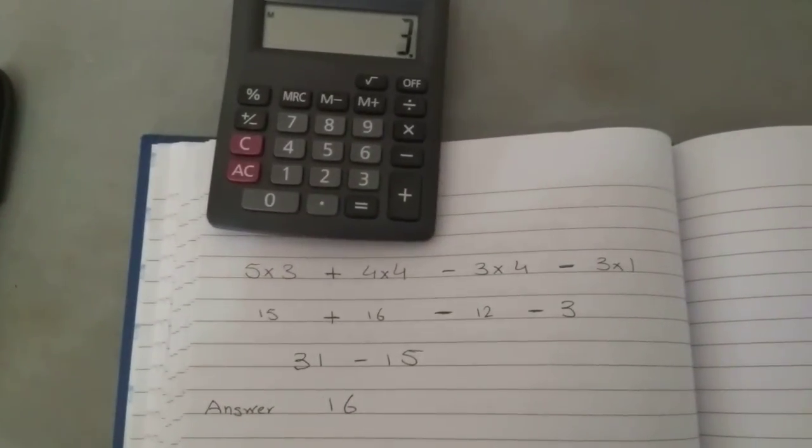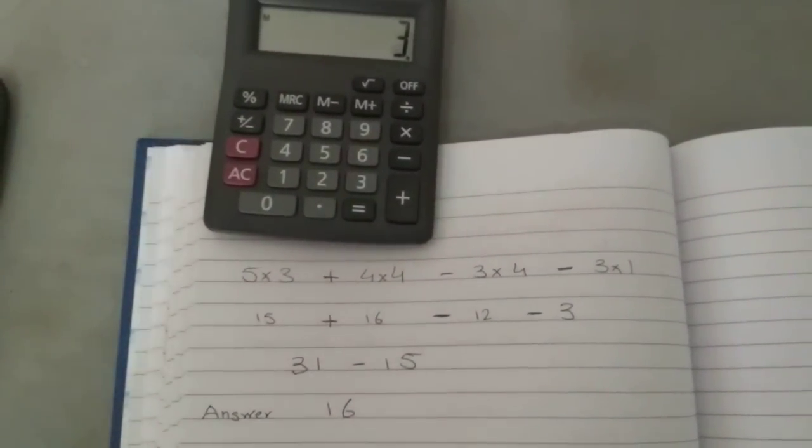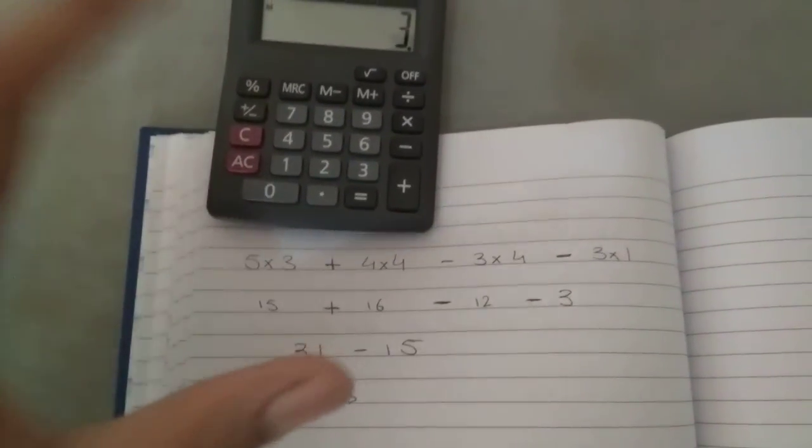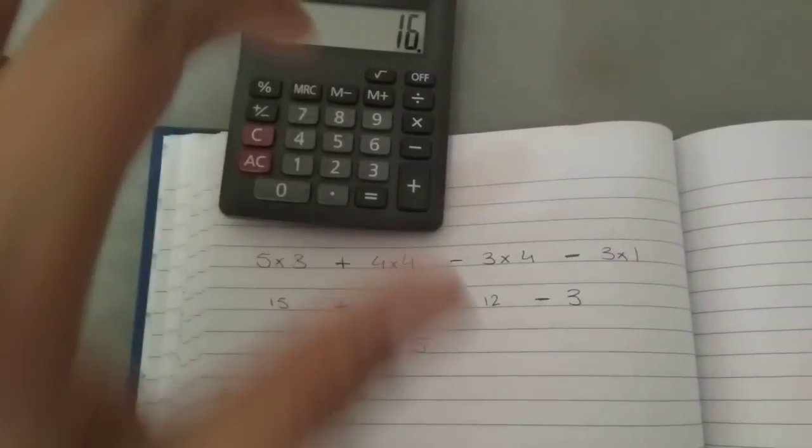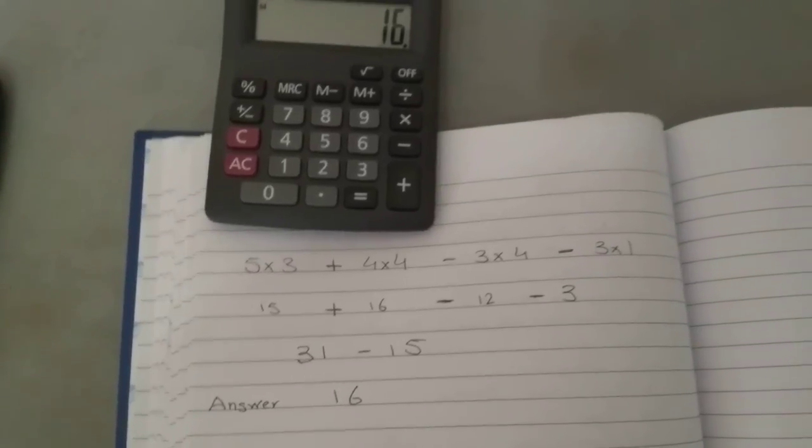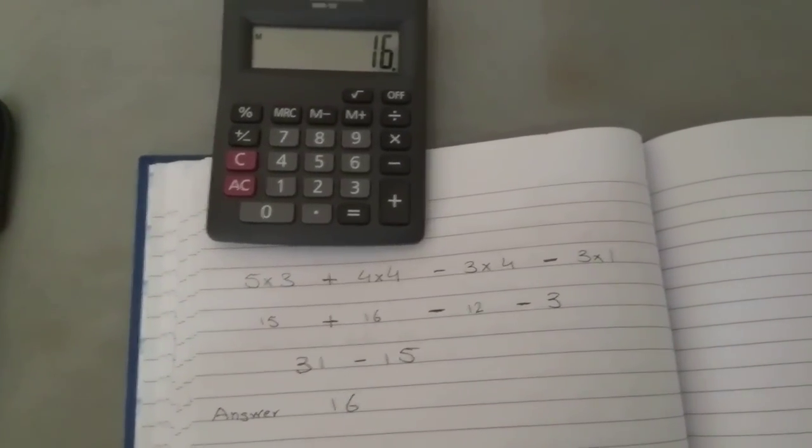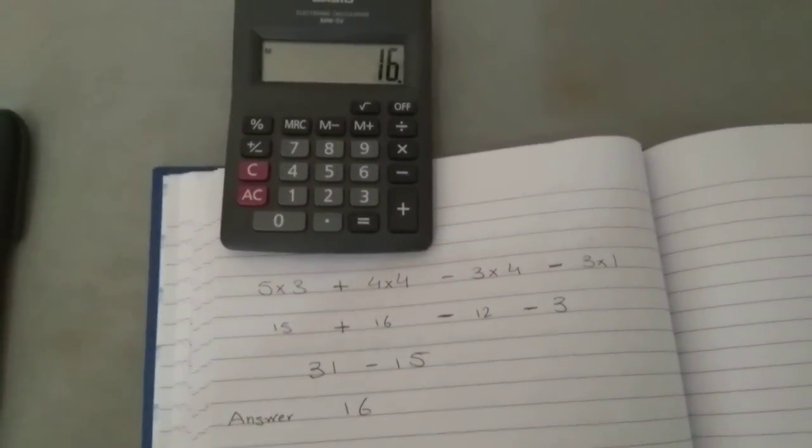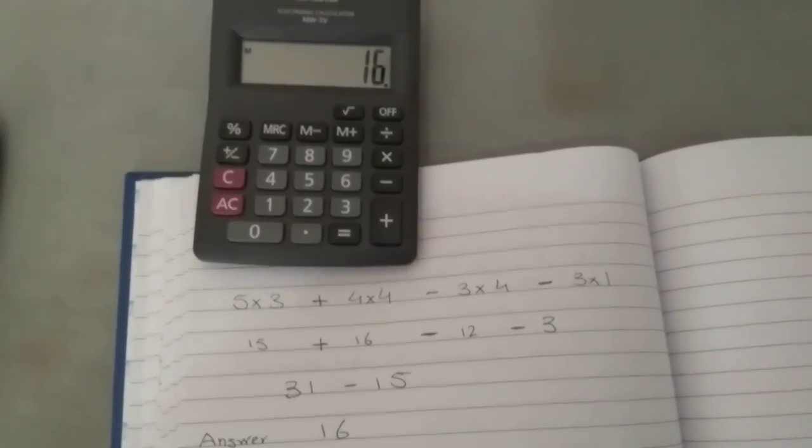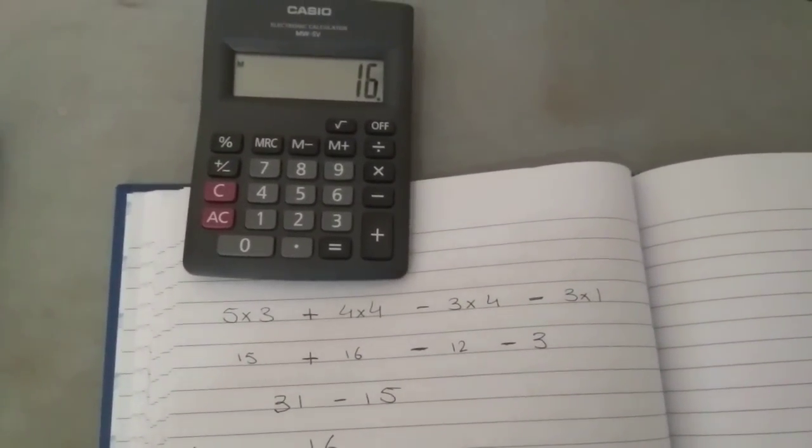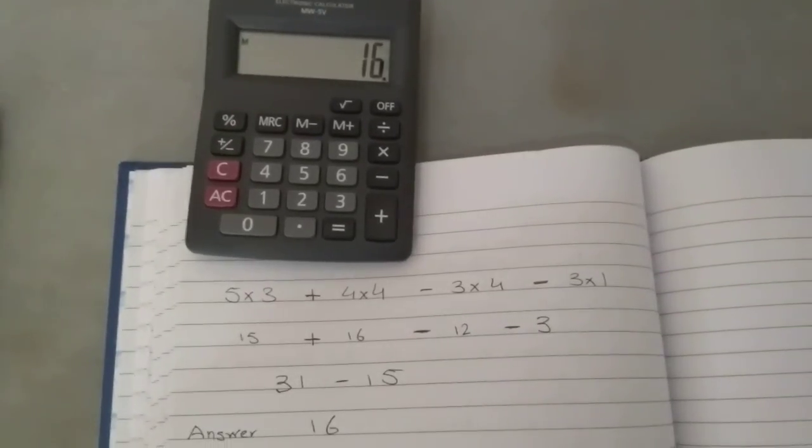Everything is done now. Now we're going to go for the result, which is in MRC. It's already stored by the calculator. That's a very good function. MRC: 16. So here you can see how we do a big calculation. We can save it in the calculator and the calculator will do it for us.